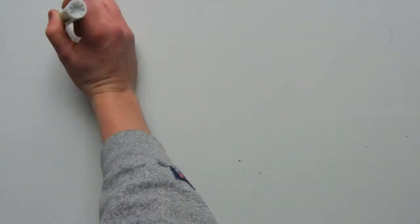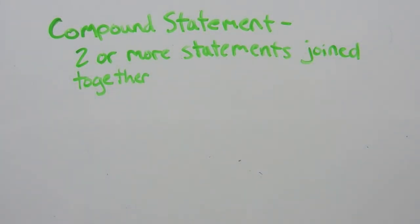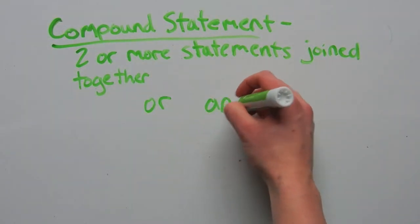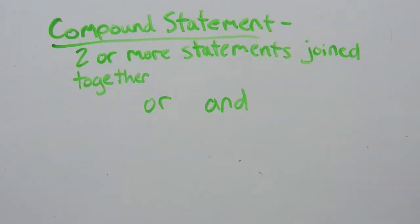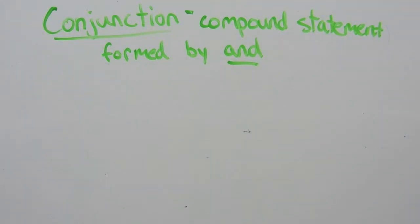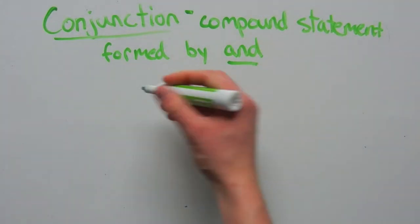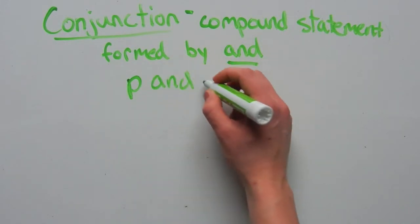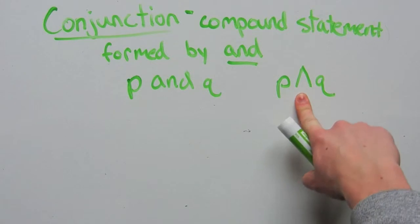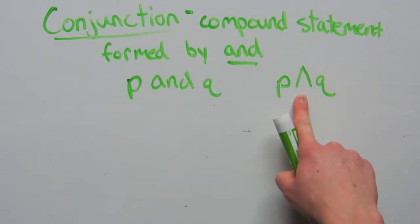A compound statement is two or more statements joined together. These statements can be joined by 'or' or by 'and,' and those have very different meanings. We're going to go over 'and' first. A conjunction is a compound statement formed by 'and.' We have statement P and statement Q. In symbols we write P ∧ Q — the symbol is like an upward caret, or an A without the middle line. When I think of 'and,' I think of the A, and that's how I remember the direction of the caret.